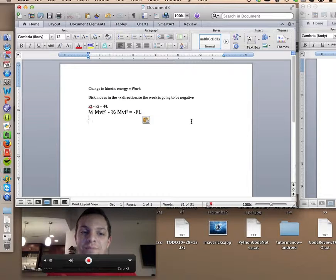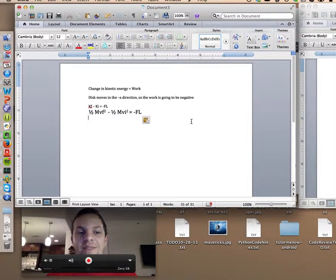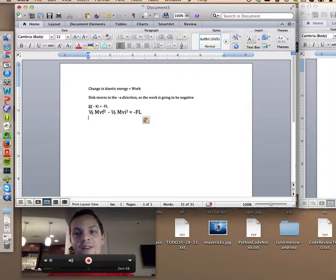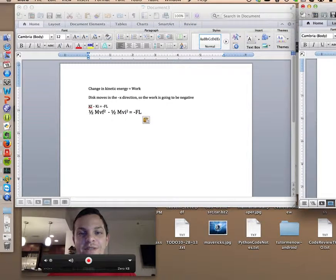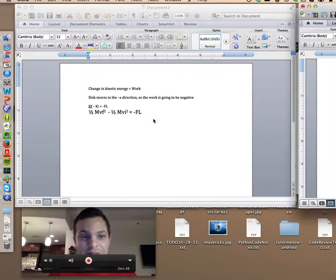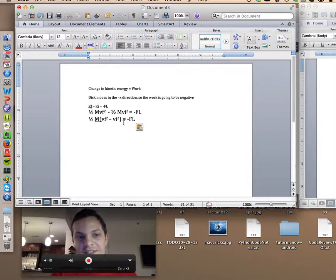Now as we start working through this, we can easily see that through just factoring, we can group together the ½ and the m. So that leaves us with ½m times (vf² minus vi²) equals negative fl. That's the next step in the problem.